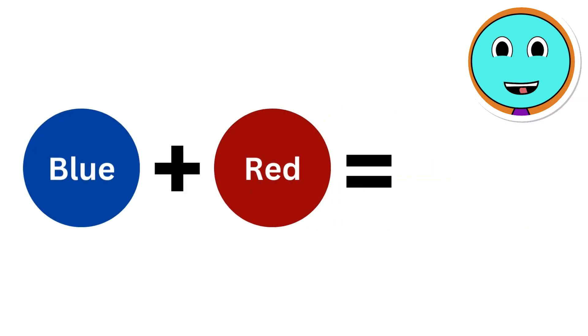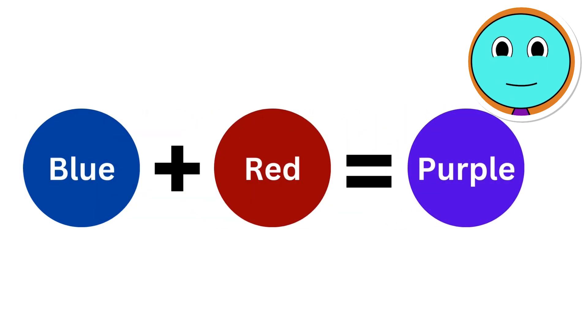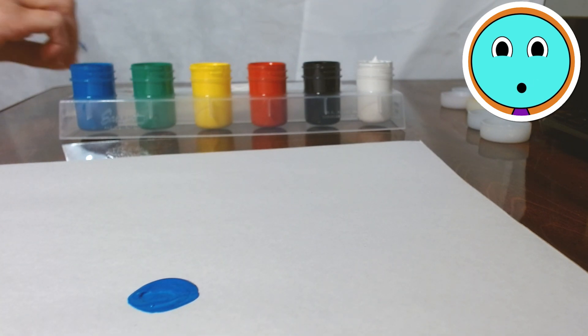So next up we have blue and red. What color do you think blue and red make when they're mixed together? Right! Purple! Our friend is going to mix blue and red together. Let's see if it's true that it's going to make purple.